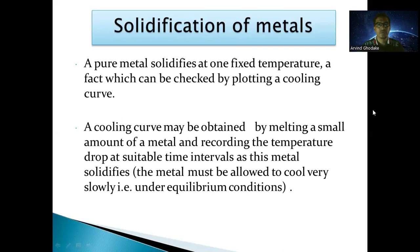A cooling curve may be obtained by melting a small amount of metal and recording the temperature drop at suitable time intervals as the metal solidifies. The metal must be allowed to cool very slowly under equilibrium conditions. The metal is in the liquid state above its melting point, and as cooling proceeds from that higher temperature, it converts from liquid to liquid plus solid, and finally into solid. This process is called solidification of the metal.